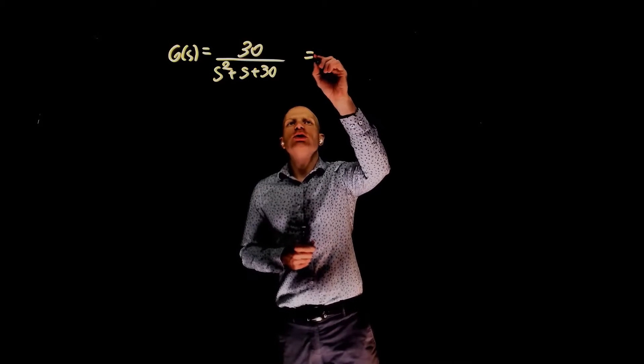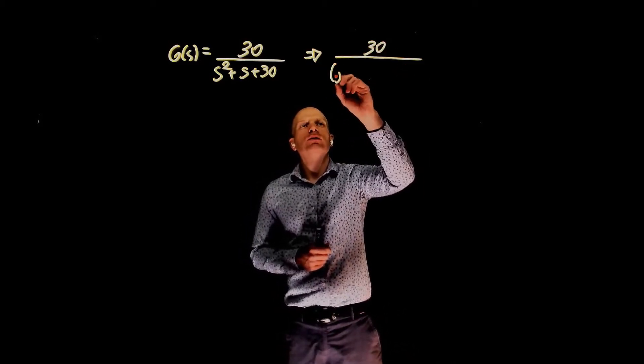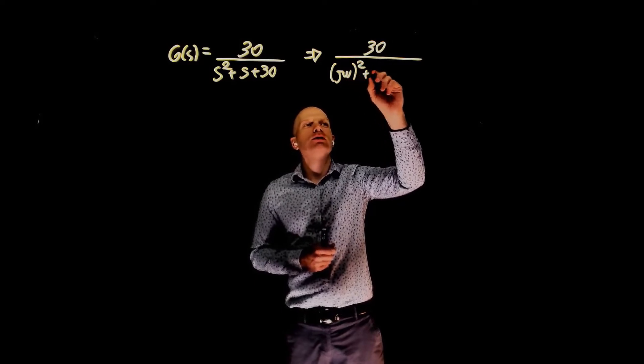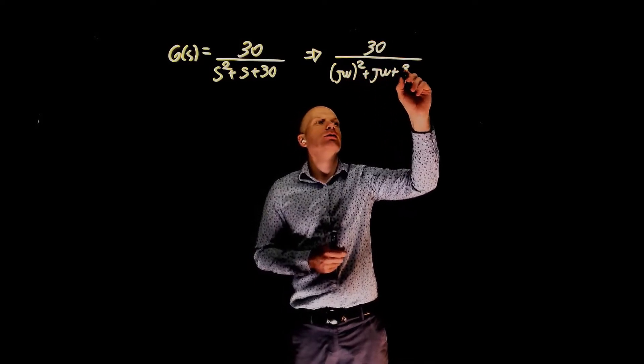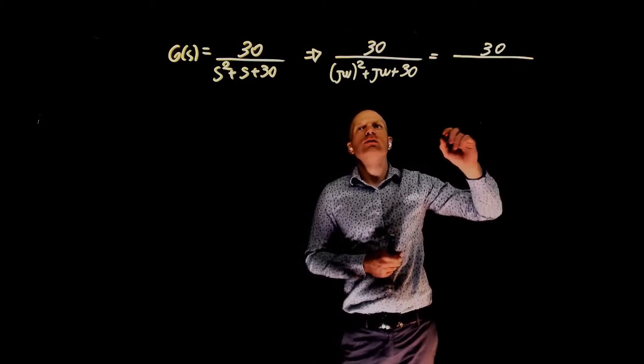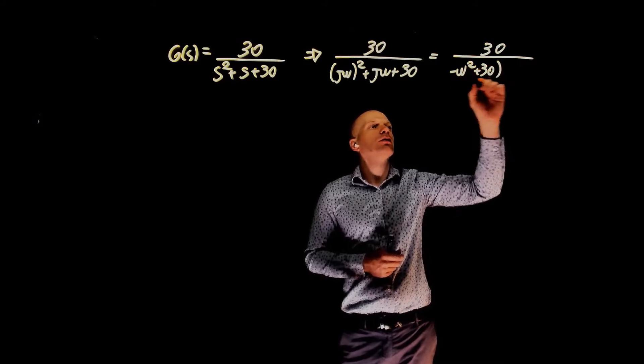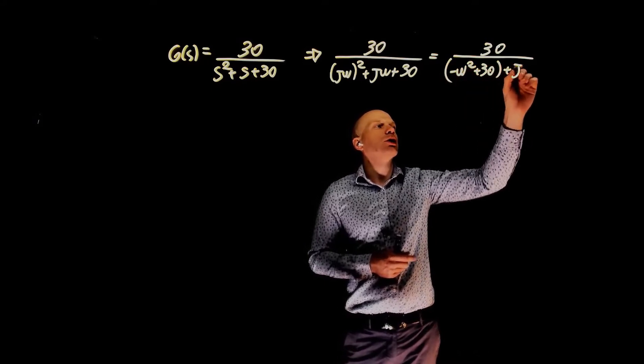By replacing s with jω, we get 30 over (jω)² plus jω plus 30, which is 30 over negative ω² plus 30 plus jω.